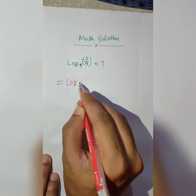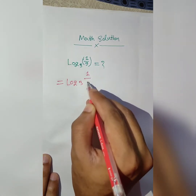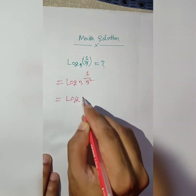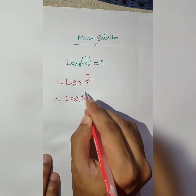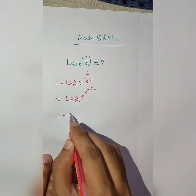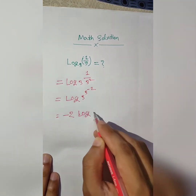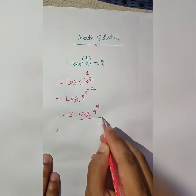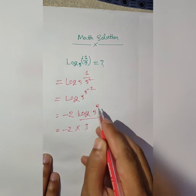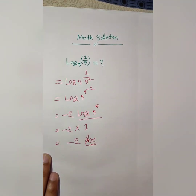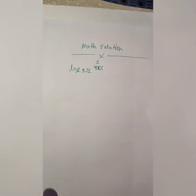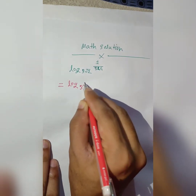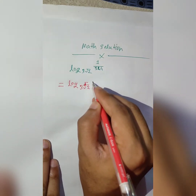log₃(1/3²), then log₃(3^(−2)) = −2. log₃(3³) × 1, log₃(3³) equal to 1 minus 2.